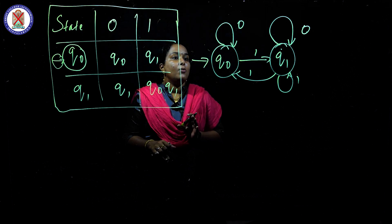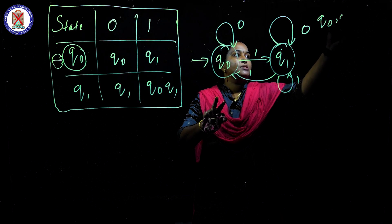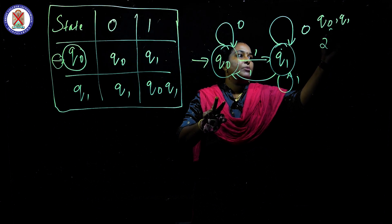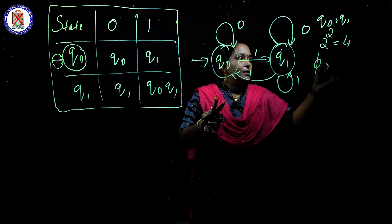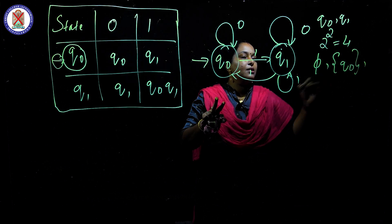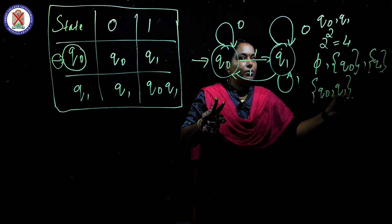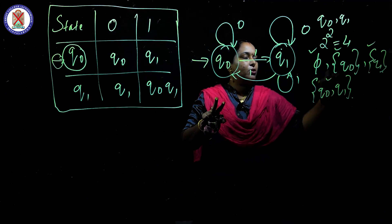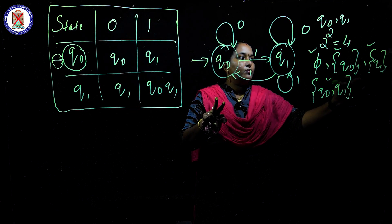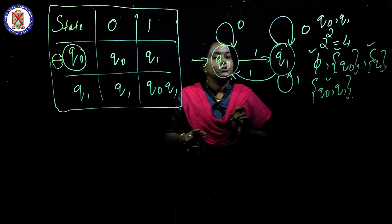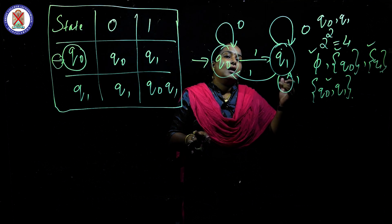So to draw the equivalent DFA, first look at the power set of {q0, q1}. This set has two elements, so the power set will be 2 raised to 2, which gives 4 elements: the null set, the set {q0}, the set {q1}, and the set {q0, q1}. So four states will result from the power set construction.